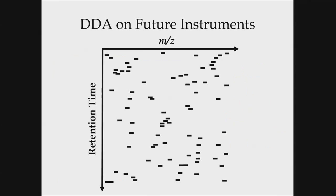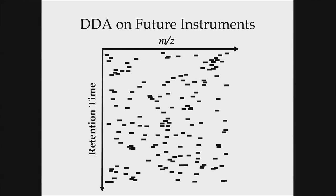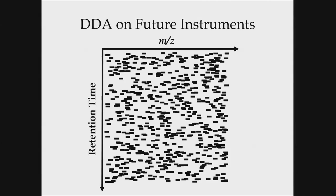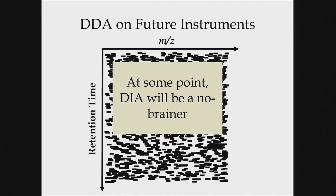As instruments get faster, DDA will be acquiring more and more MS2 spectra, and at some point it'll be a jumbled mess where narrower DIA windows would have been better. That said, DDA still fits well for fast gradients — a faster scanning instrument lets you shorten gradient length and still get many IDs. If you make your gradient faster with DIA, your peaks get narrower and the technique becomes more limited. But at some point DIA will be a no-brainer.